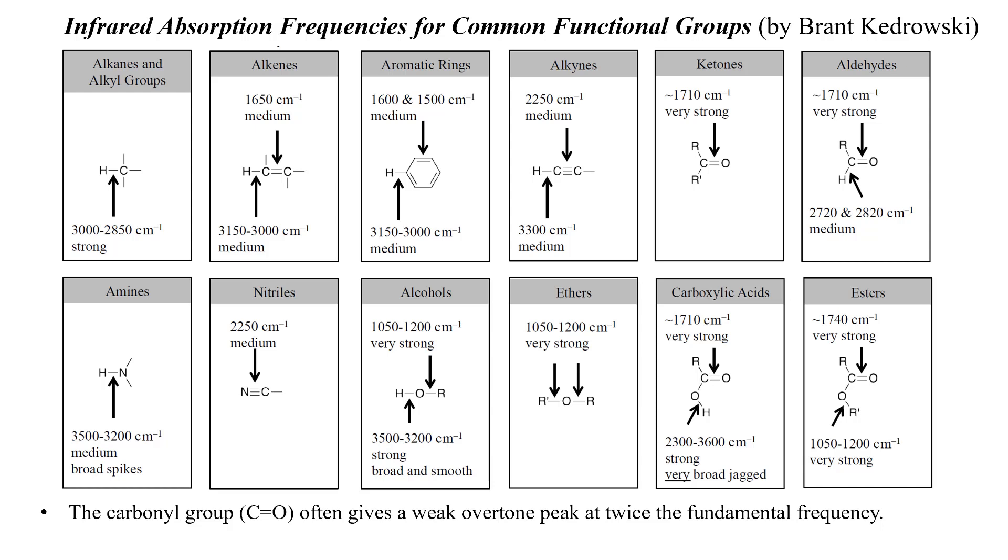Carbonyl groups often show a weak overtone peak. That's a peak that shows up at twice the fundamental frequency. So, for example, if you had a carbonyl peak at 1710, you might expect to see an overtone peak at 3420, twice the fundamental frequency. They typically are weak, but they oftentimes show up, and they're in a region of the spectrum that could be confused with an OH group, an NH group, or a C-H group of the sp hybridized type, so it's important to not be confused by these overtone peaks.